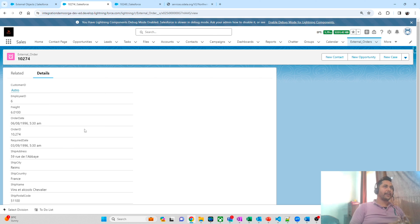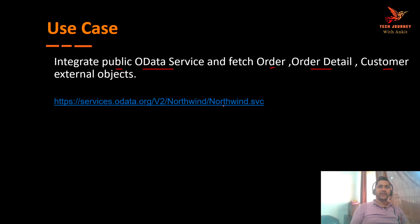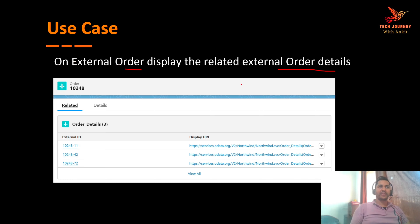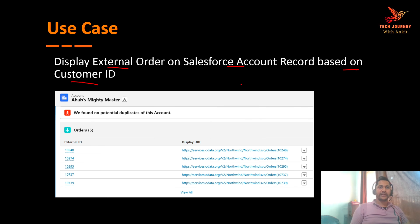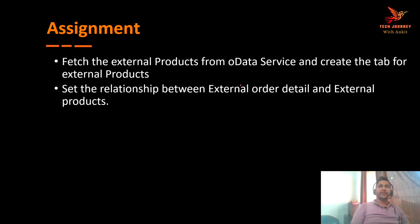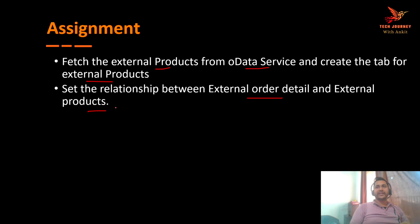This is how you set up relationships between an external object and a Salesforce object. I hope you got an understanding of what is OData, what are OData adapters, and with multiple use cases, how you can access the OData service and set up relationships between external objects. We also discussed the different things you can do with OData external objects. For your assignment: fetch the external products from the OData service, create a tab for it, and set up the relationship between external order detail and external products. Let me know in the comments what kind of relationship you set up.